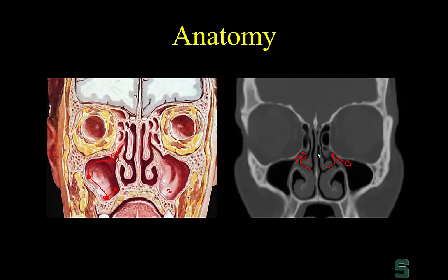When someone undergoes functional endoscopic sinus surgery, this is what they're trying to open — the normal sinus drainage of the maxillary sinus. Surgeons resect part of the ethmoid sinuses, the middle turbinate, and take out the uncinate process, expanding the opening between the medial portion of the maxillary sinus and the nasal cavity to permit greater egress of secretions.